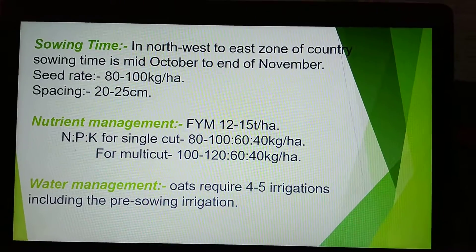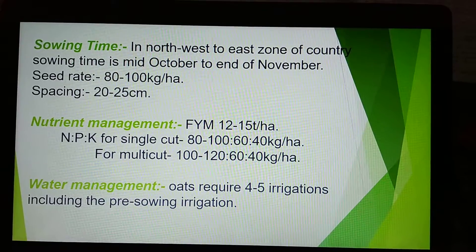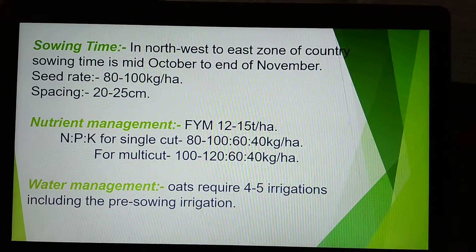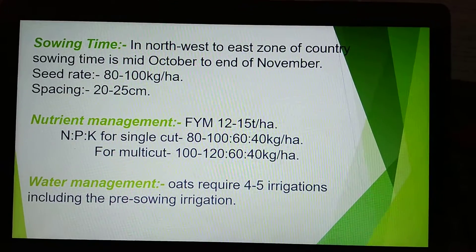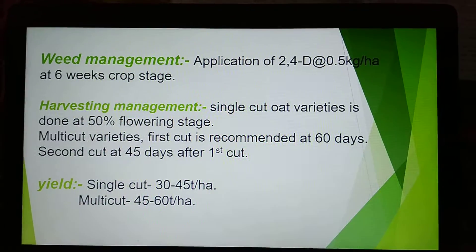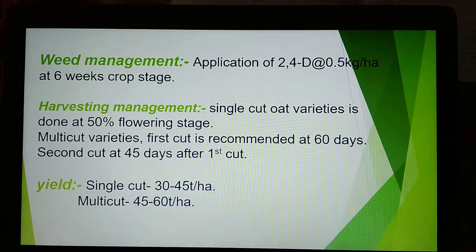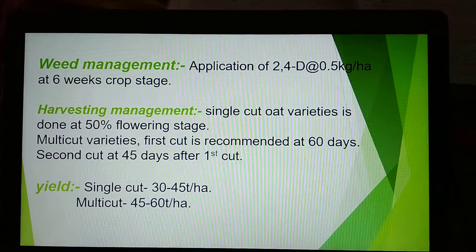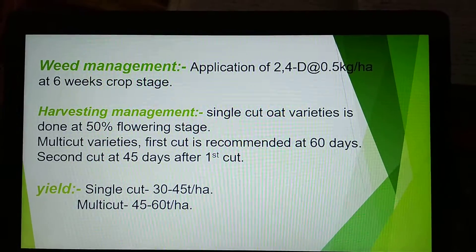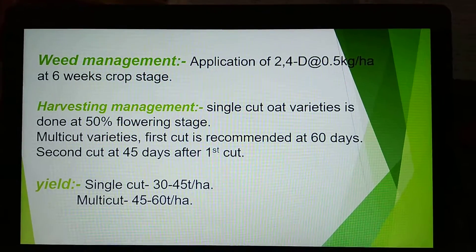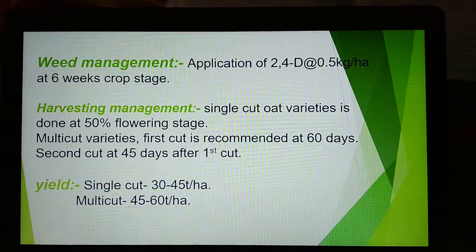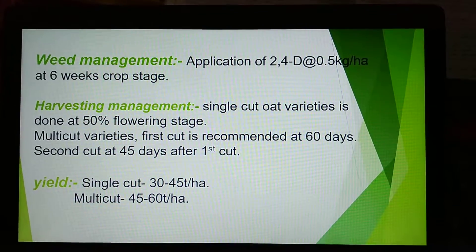Water management: Oat is mostly grown in the rabi season, so it requires 4–5 irrigations including pre-sowing irrigation. Weed management: Application of 2,4-D at the rate of 0.5 kg per hectare at the 6-leaf wheat crop stage.